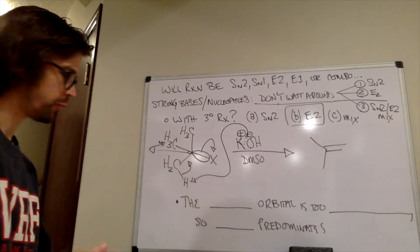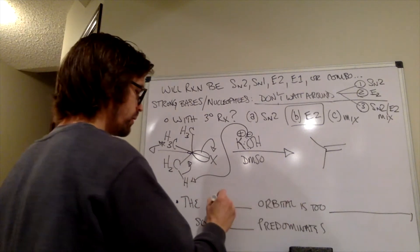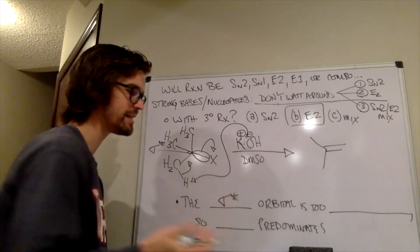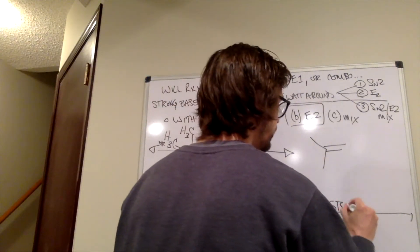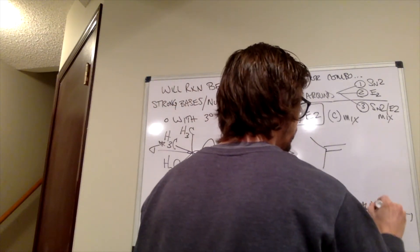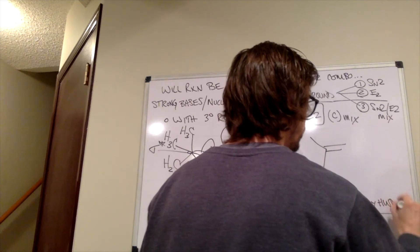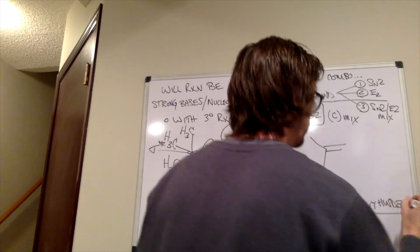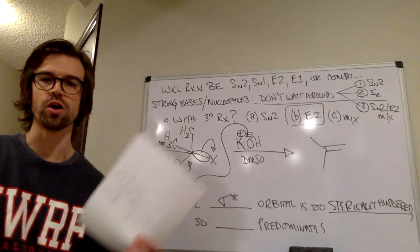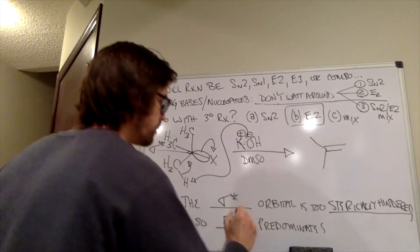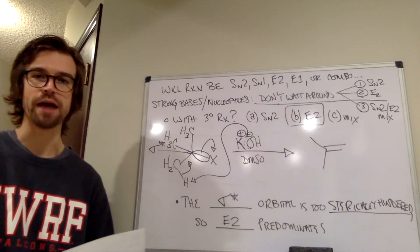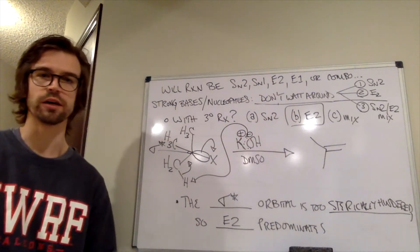Why was that? What do we have on our page? The blank orbital, the sigma star, that antibonding orbital, is too sterically hindered. Those CH3 groups are all blocking it. So, E2 predominates, that's the major reaction pathway, so we only get E2 here.